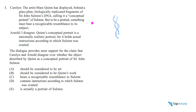And then Carolyn says: but to be a portrait, something must bear a recognizable resemblance to its subject. Draw the conclusion yourself — what do you think Carolyn thinks about whether this is an actual portrait? She just stated that the necessary condition of a portrait is that it must bear a recognizable resemblance. And does this thing bear a recognizable resemblance? No. So Carolyn obviously does not think this is a portrait.